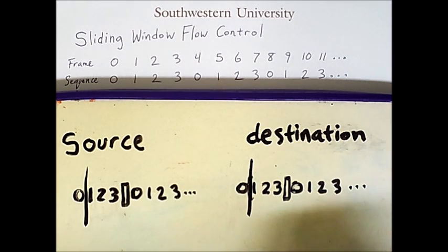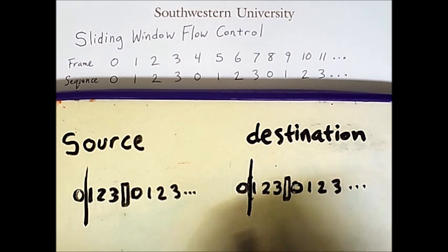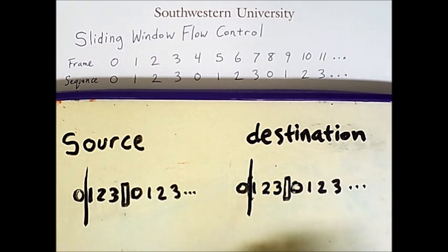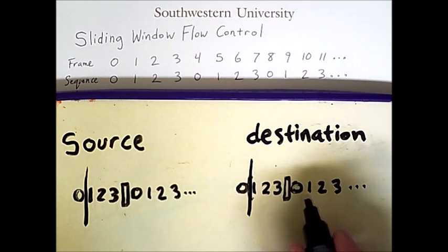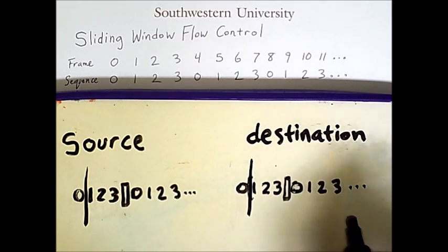Finally, the destination gets around to acknowledging these frames. It will acknowledge them all at once with a single message. It says, I am ready to receive frame 0. This bar moves, and the window will slide open again, like so.